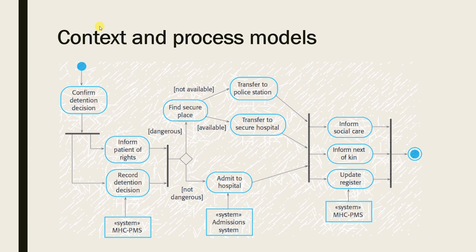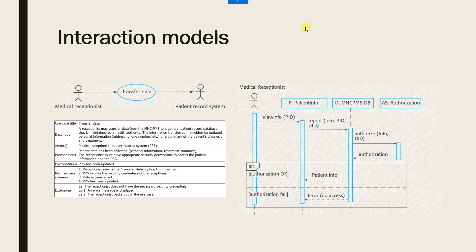UML activity diagrams may be used to define business process models. We have an example in the picture showing a UML activity diagram describing the process of involuntary detention and the role of a mental health care patient management system in it.